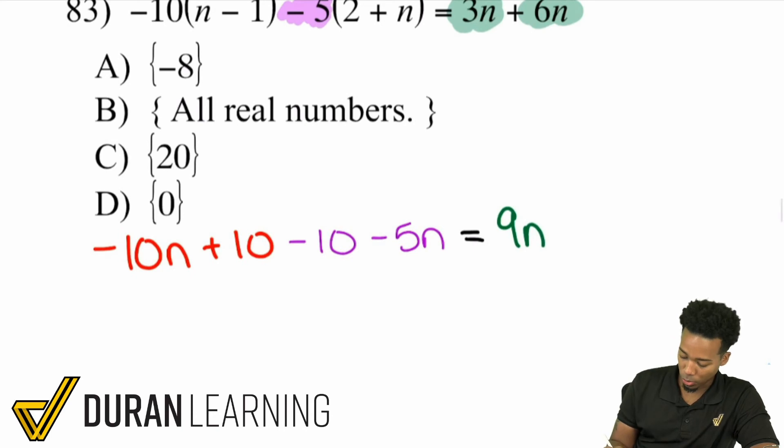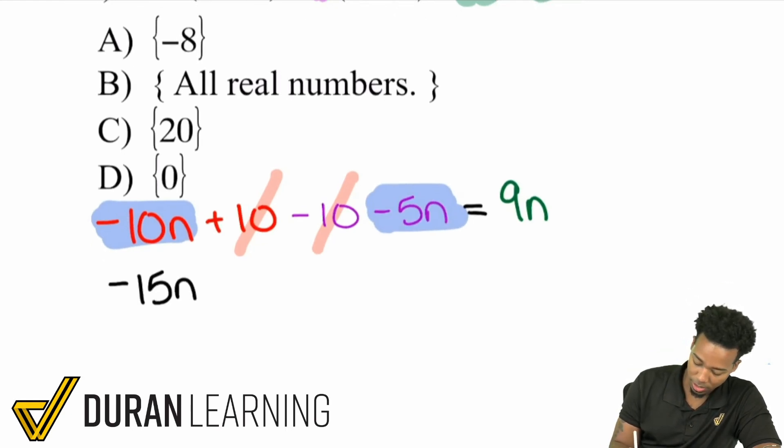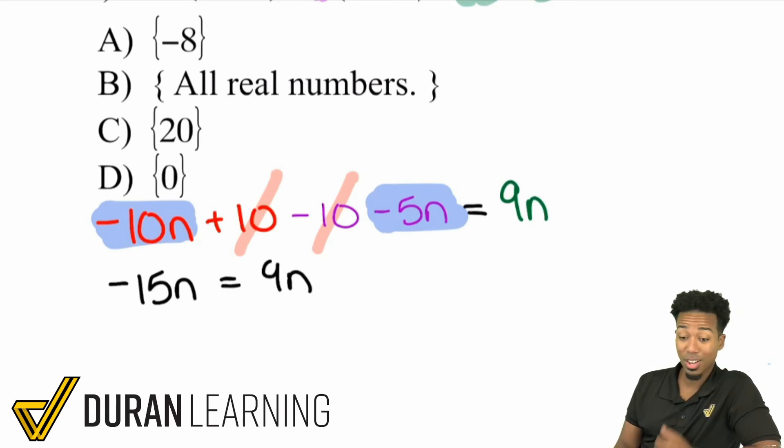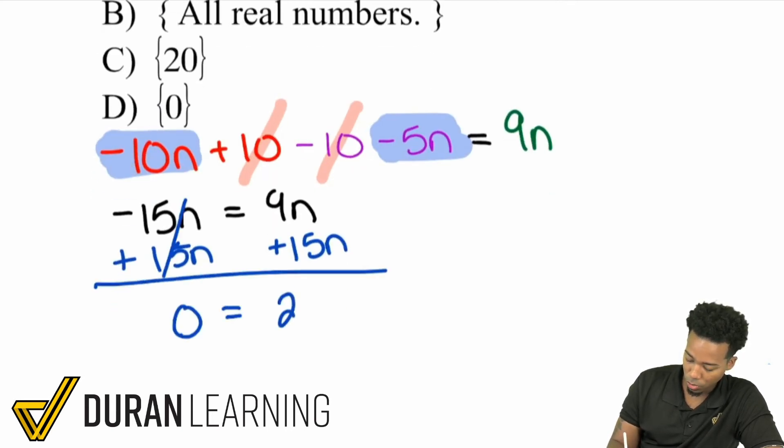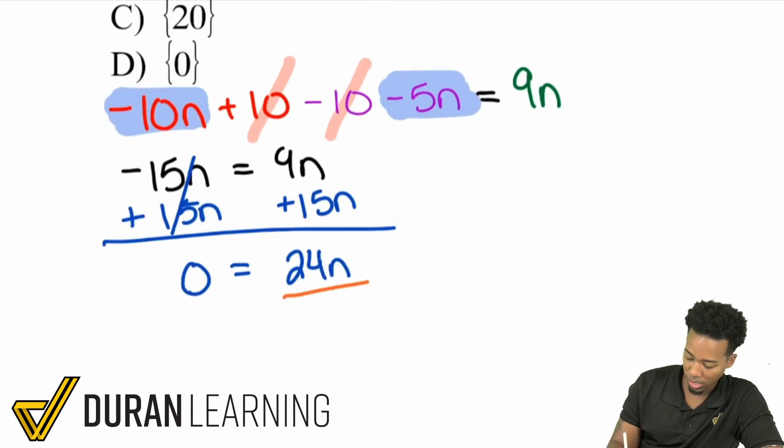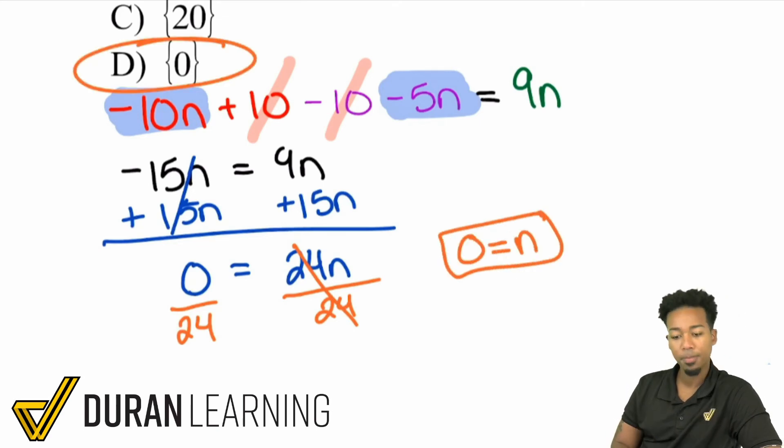From here, what I noticed is that we can actually cancel out the positive 10 and the negative 10 because adding 10 and subtracting 10 cancels out. And also, we can bring together the negative 10n minus 5n, which is negative 15n. And so we have the 9n on the right side. If you check this out, the only way that this can work out is if n is 0 because 15 times 0 is 0, 9 times 0 is 0. But to prove it, I'll add 15n on both sides. What we get when we do that is 0 equals 24n. So the last step is divide by 24 and we are done. 0 equals n.